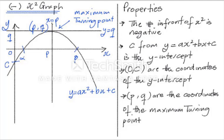So this is an example of a negative x-squared graph. Please note the x-axis and the y-axis. The properties for the negative x-squared graph are similar to those of the positive x-squared graph. The number in front of x-squared must be negative to get this shape. The constant term c is the y-intercept, and since the y-axis is the line x equals 0, the coordinates of the y-intercept are (0, c).